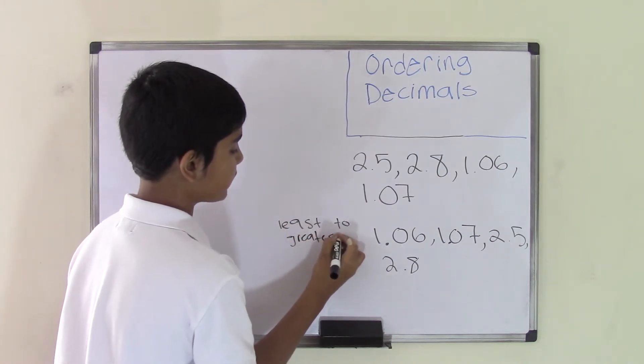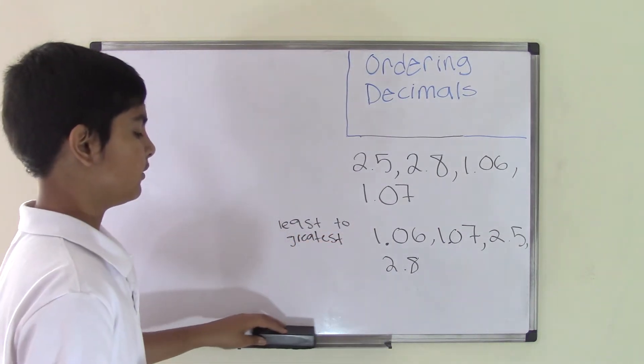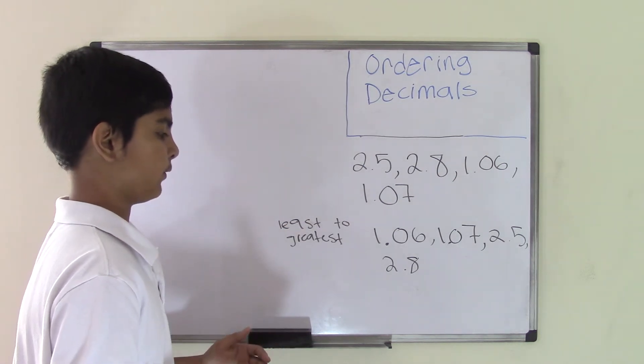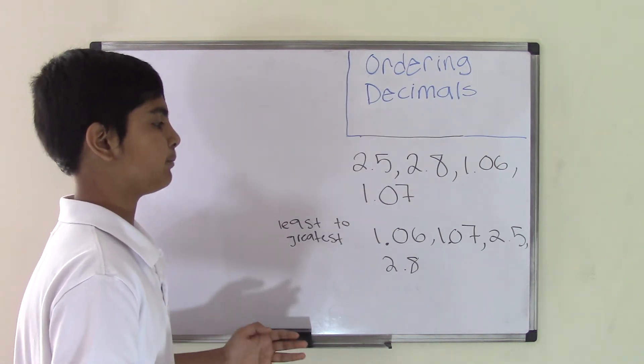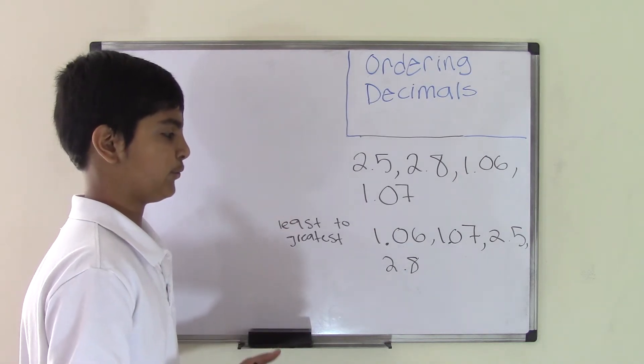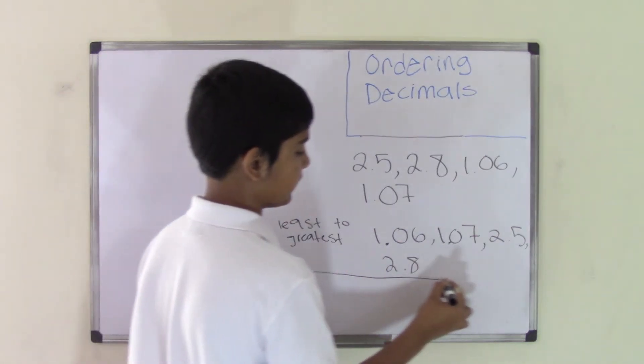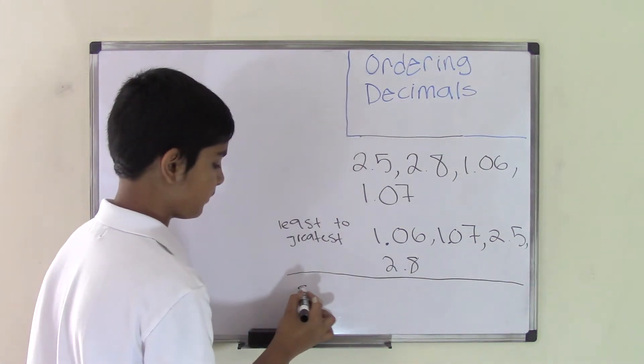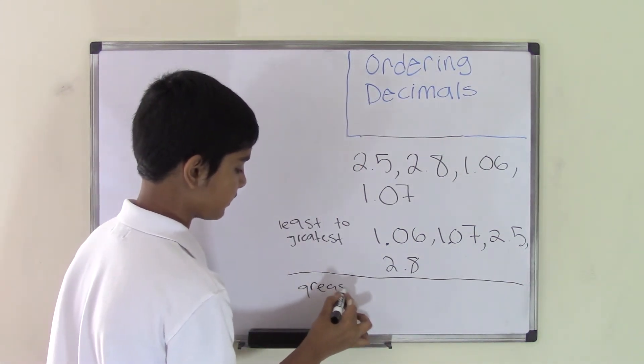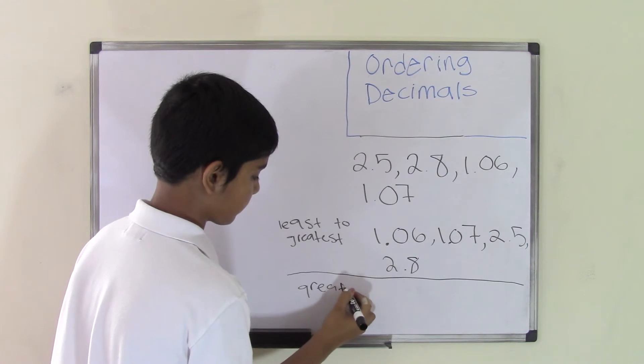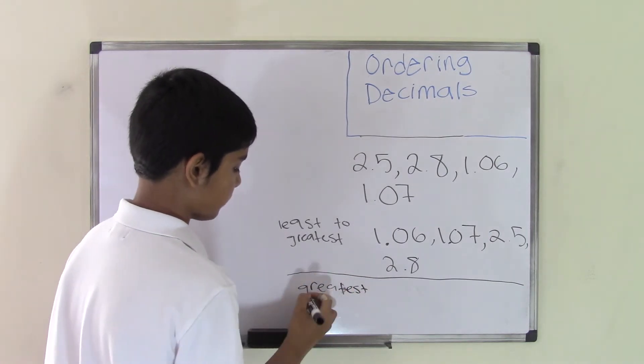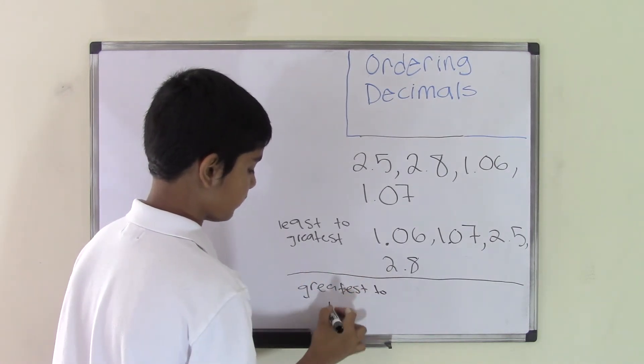There's another form which is greatest to least form. That's pretty much the same thing except you're starting from the greatest value and going to the least value. So I can also put this set in greatest to least form.